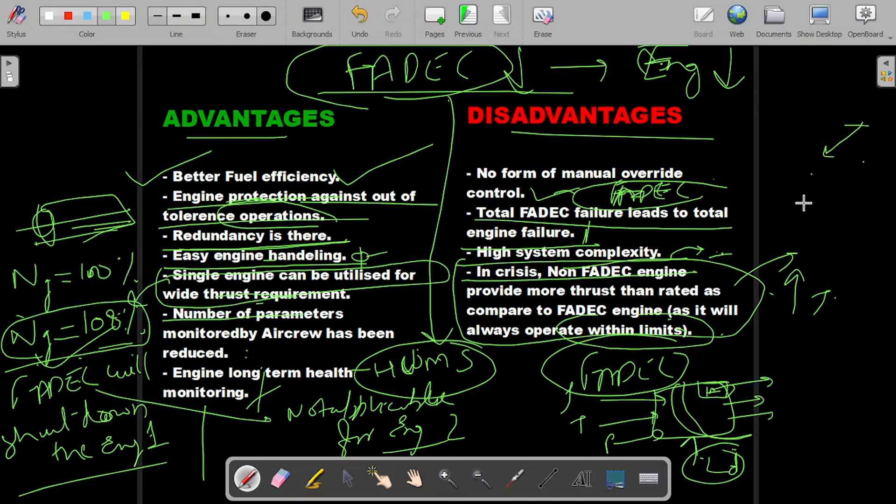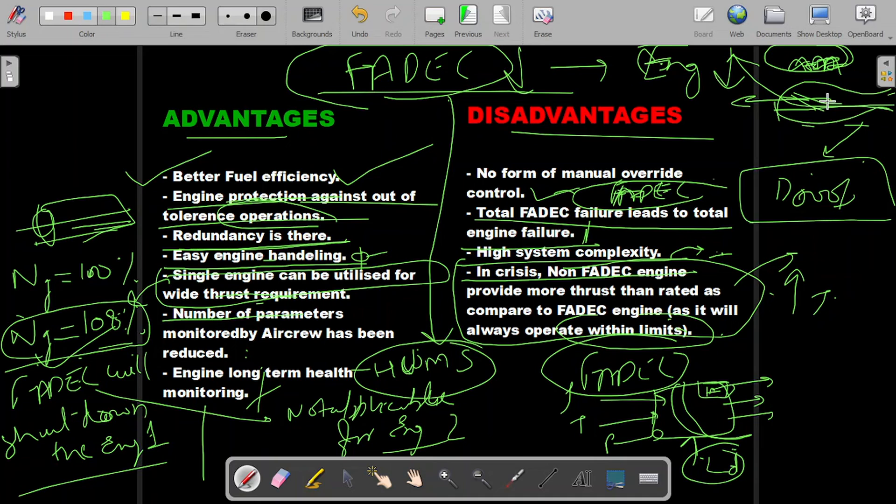Putting a FADEC reduces droop in the helicopter. A helicopter is moving ahead and the pilot has to increase height, so he lifts the collective stick. Lifting the collective stick increases the pitch, which means increase the angle of attack, which increases drag. Because of the drag, the rotor RPM reduces and the helicopter starts going down.